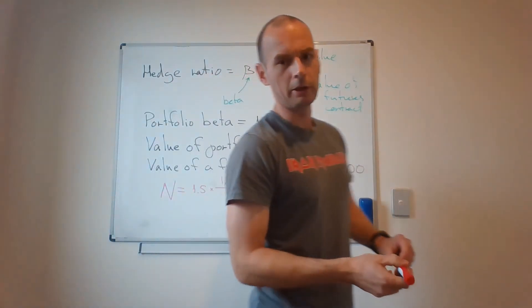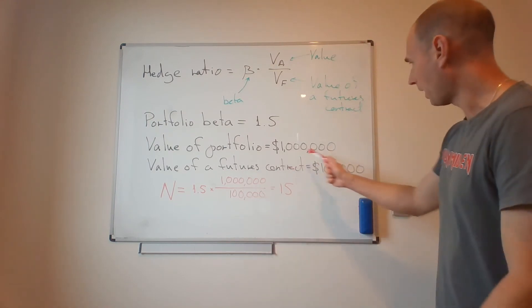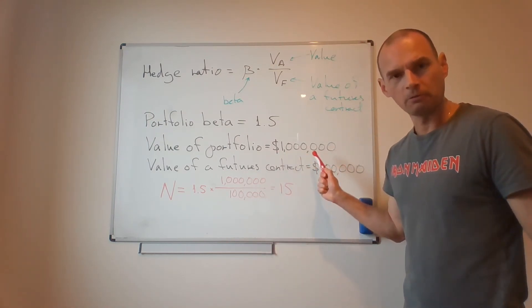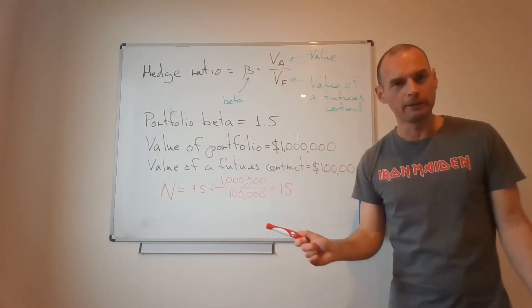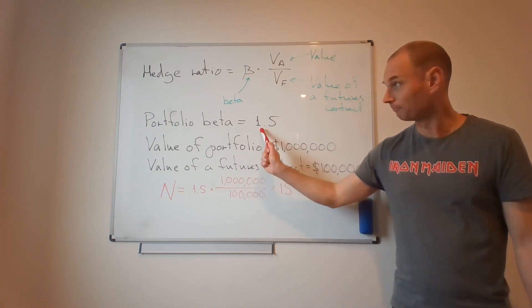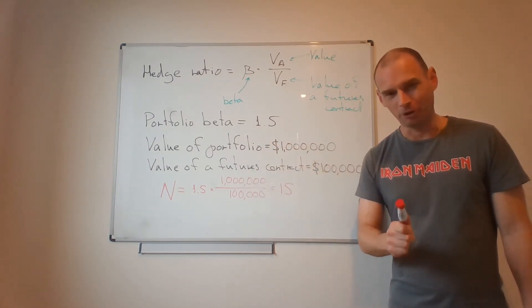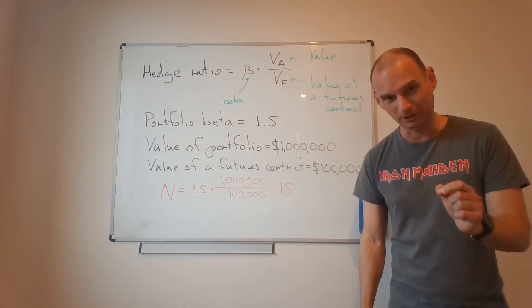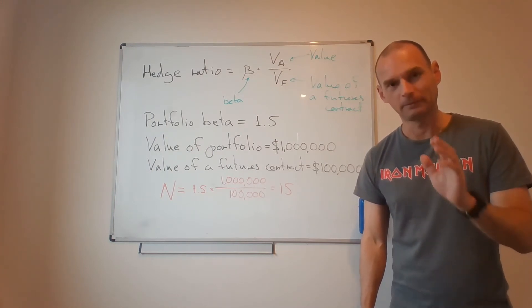So why is it that I need to hedge a $1 million portfolio with $1.5 million worth of futures? Because my portfolio is one and a half times as volatile as the market. That's the reason why.